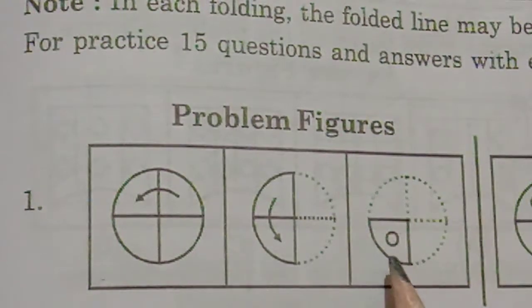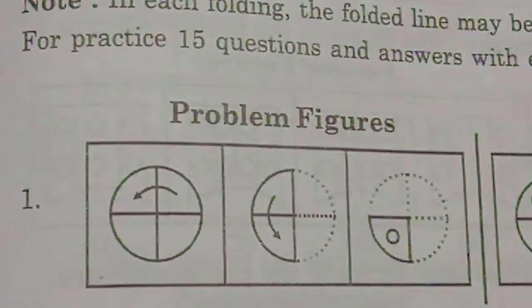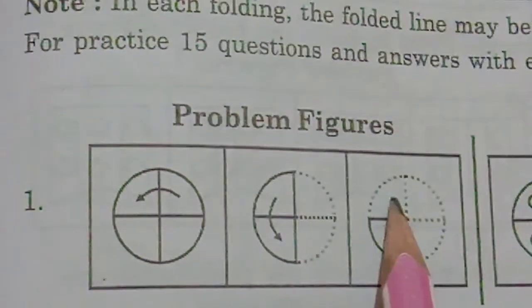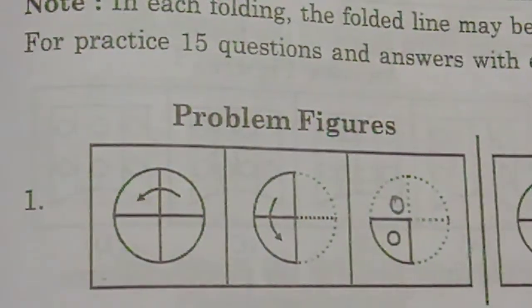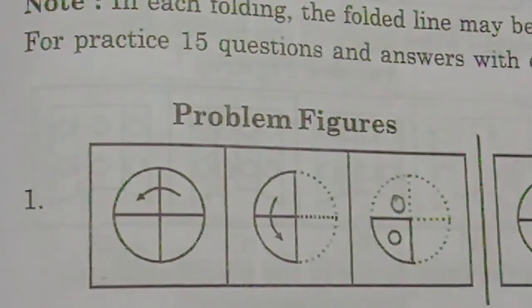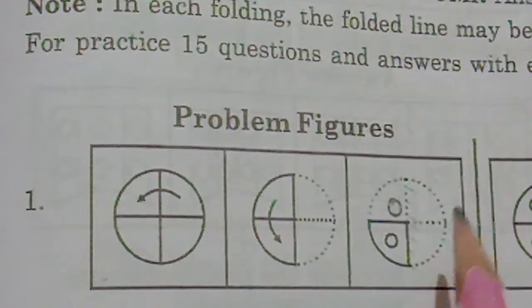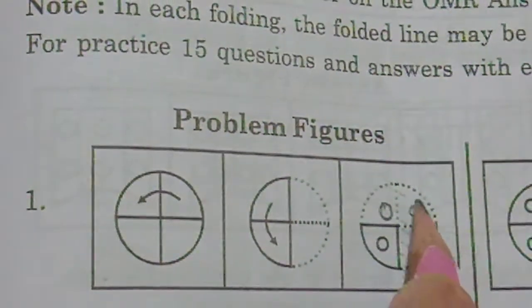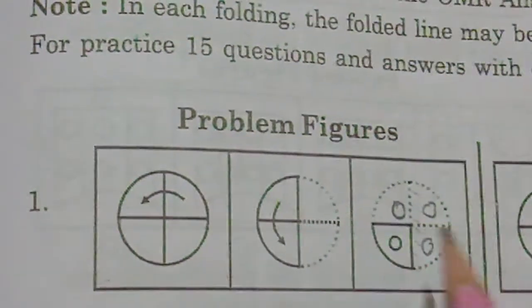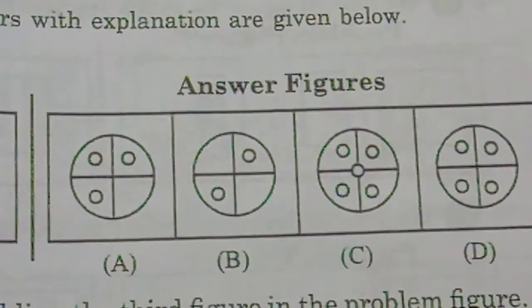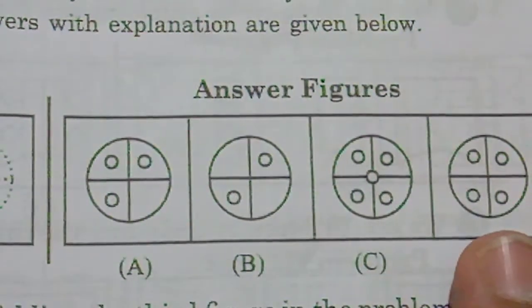So what will be the answer? You can guess here — if you take this as a mirror, one more circle will come here. That is the first step. After this, taking this complete part as a mirror, this circle will come here and this will come here. Looking at the answer figures, the fourth will be the answer.